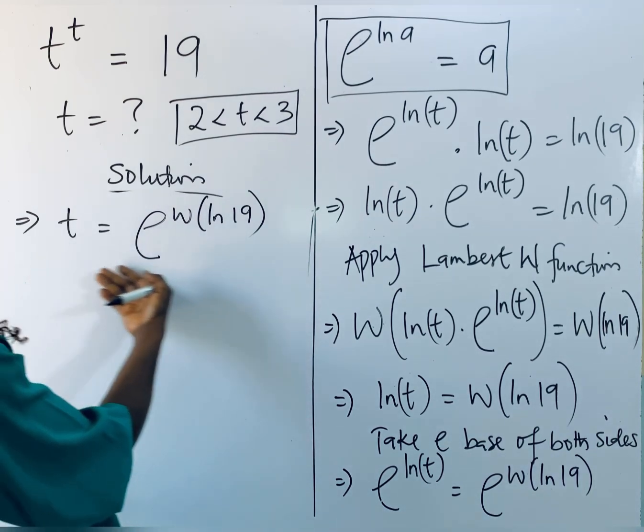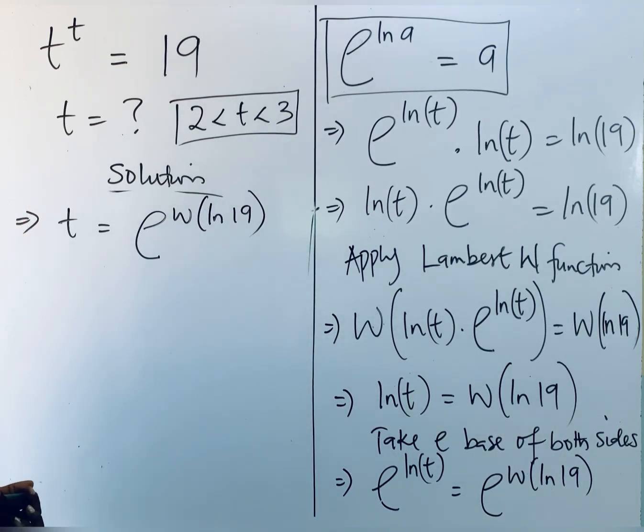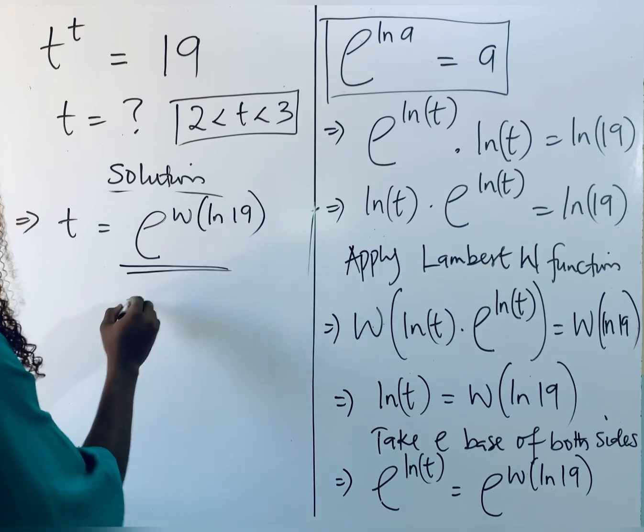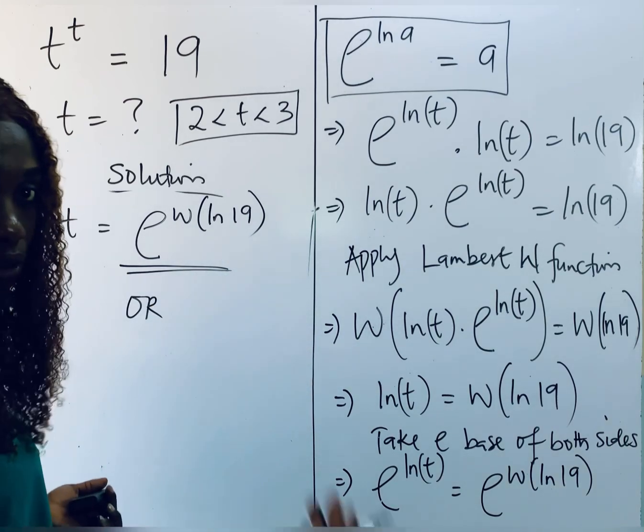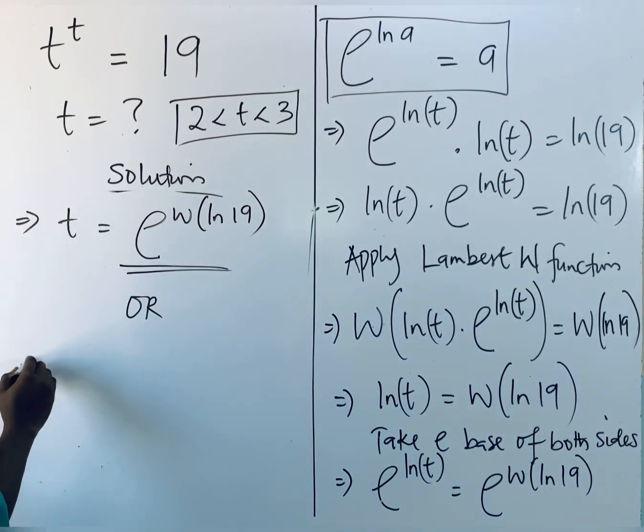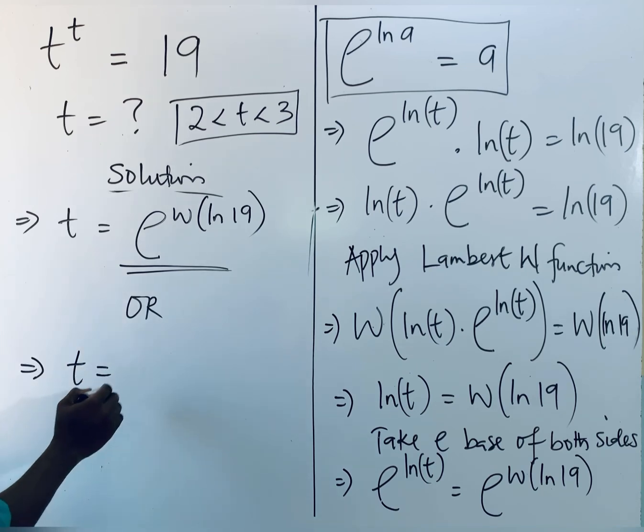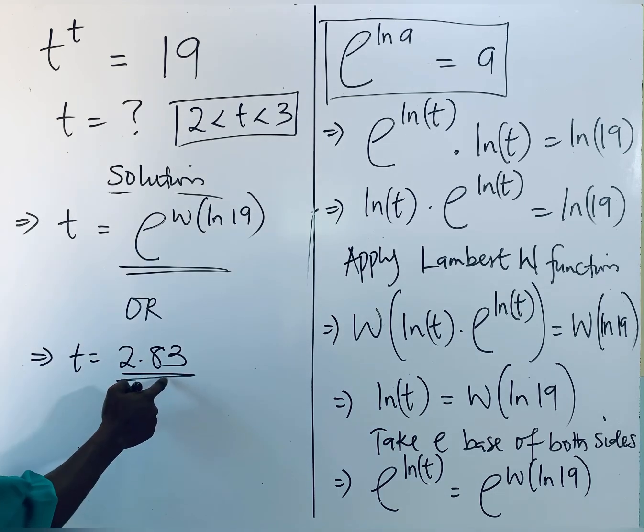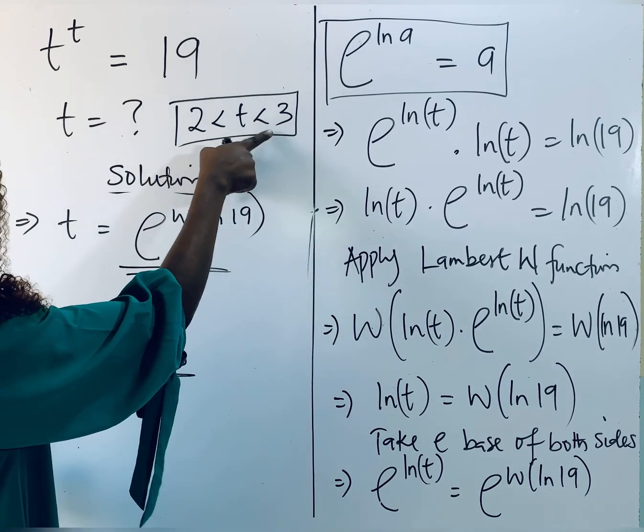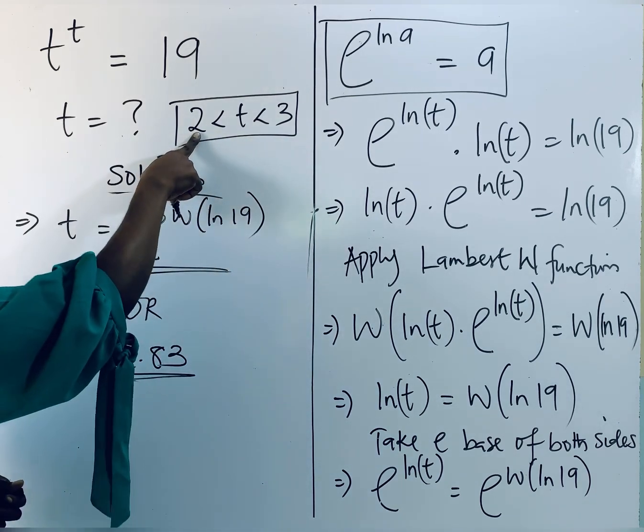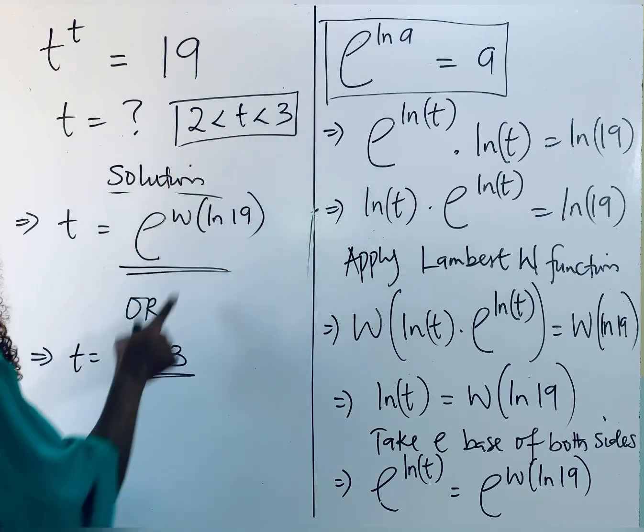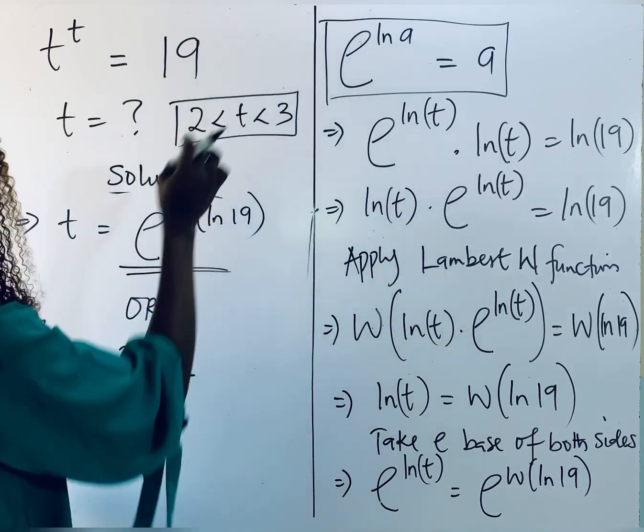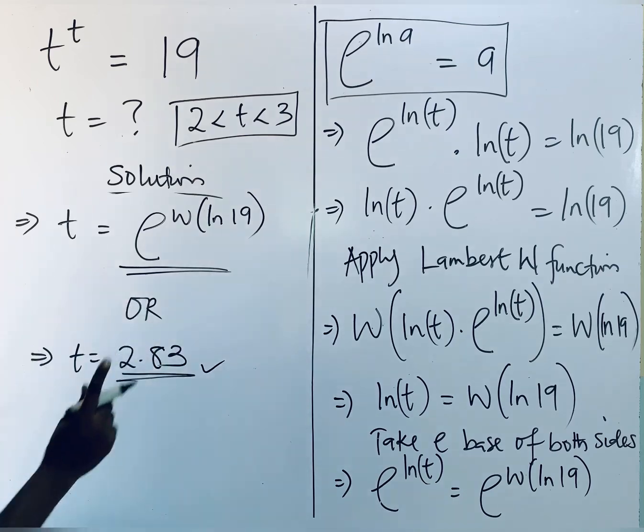At this point, you are free to leave your answer in this form. You can also leave it in a numerical form. If you do that, you're going to have t equals 2.83. And you observe carefully that this is within this range. Do you see what you have from earlier stated? It's from 2 to 3, so you can find this number in this. Now this gives us the value of t.